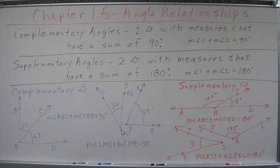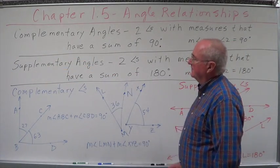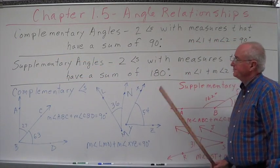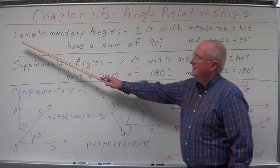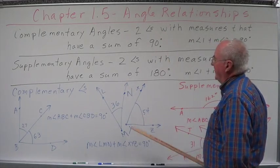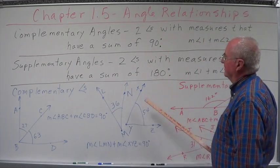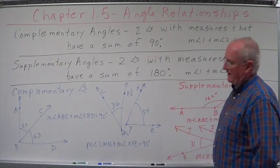I have difficulty telling these apart, and even to this day, this is what I do. C and S. C comes before S in the alphabet. 90 and 180 — 90 is less than 180. C, S, 90, 180. Put them in alphabetical order, put them in numerical order: C goes with 90, S goes with 180.